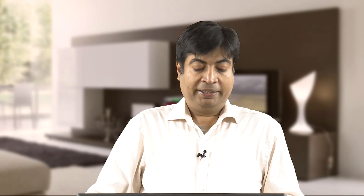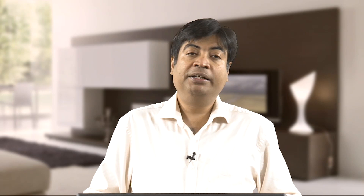The next important aspect of DC microgrid is controllable generation, which provides stable and necessary levels of voltage and frequency. In an AC or hybrid system, frequency must be maintained at every point. In a DC system, you have a DC bus and must maintain its voltage at every point within a tolerance limit. In an AC system, you must maintain both voltage and frequency.